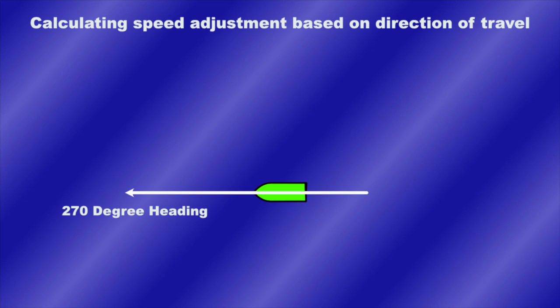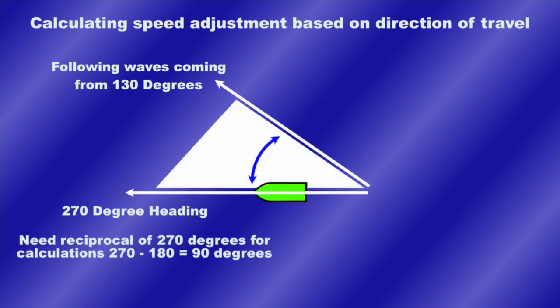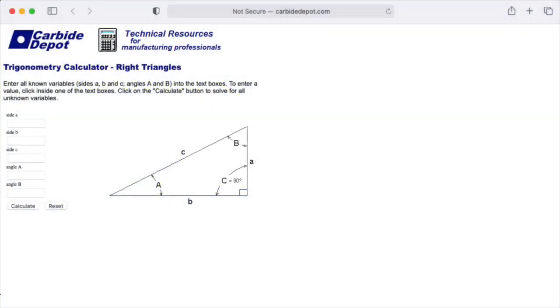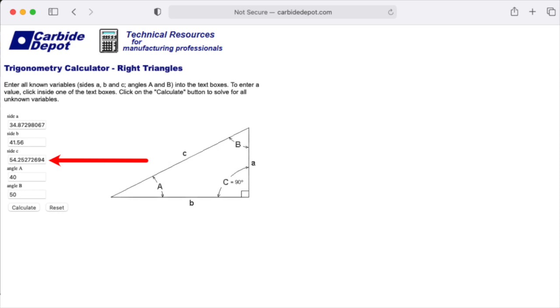Chicory is headed at 270 degree heading due west. We have following seas coming from 130 degrees and we want to calculate the difference between our direction of travel and where the waves are coming but we need a reciprocal of 270 degrees because we need to have the seas and the boat coming from the same angle. So that basically ends up being 90 degrees. We take 130 degrees minus 90 degrees and that gives us a 40 degree difference. Now we can do that speed adjustment with a little bit of trigonometry on that 40 degree angle. I use Carbide Depot's trigonometry calculator. I take the wavelength on side B of 41.56, I put angle A at 40 degrees which is the angle difference between the boat's travel and the wave and then I get 54.25.